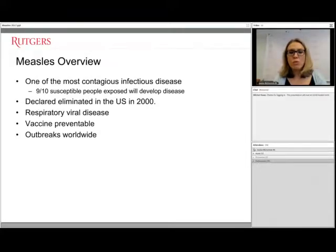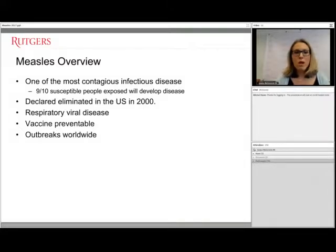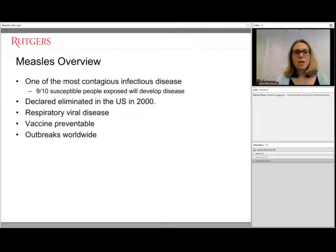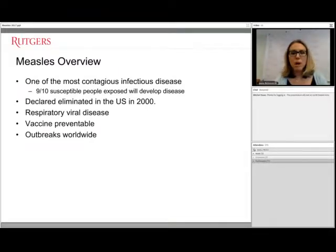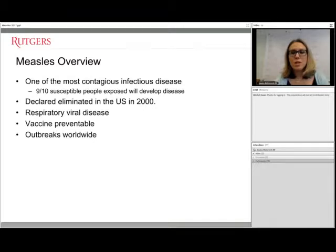Measles is one of the most contagious infectious diseases that we currently know. Nine out of ten people who are susceptible, if they are exposed, will develop measles disease. Measles was declared eliminated in the United States in 2000, though we still see sporadic outbreaks mainly due to unvaccinated groups and people traveling from countries where measles vaccination is less prevalent. Measles is a respiratory viral disease, so respiratory protection is important.